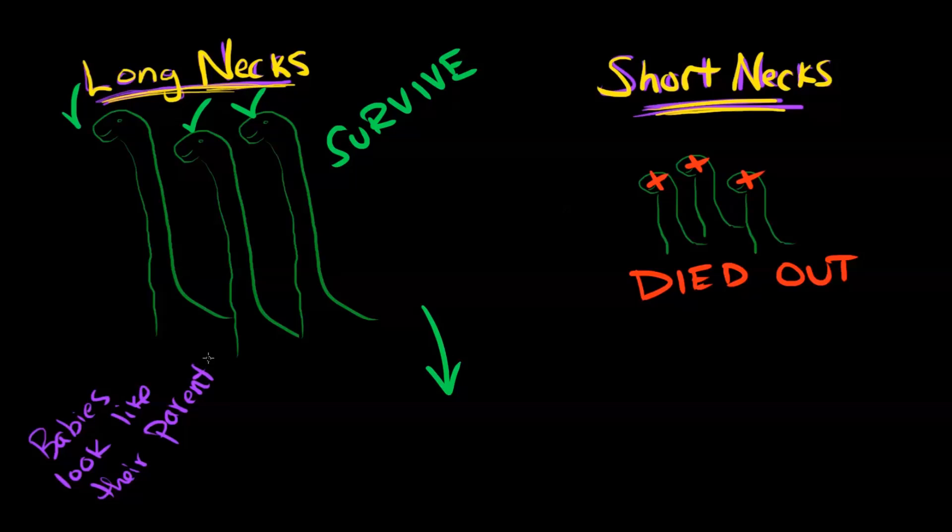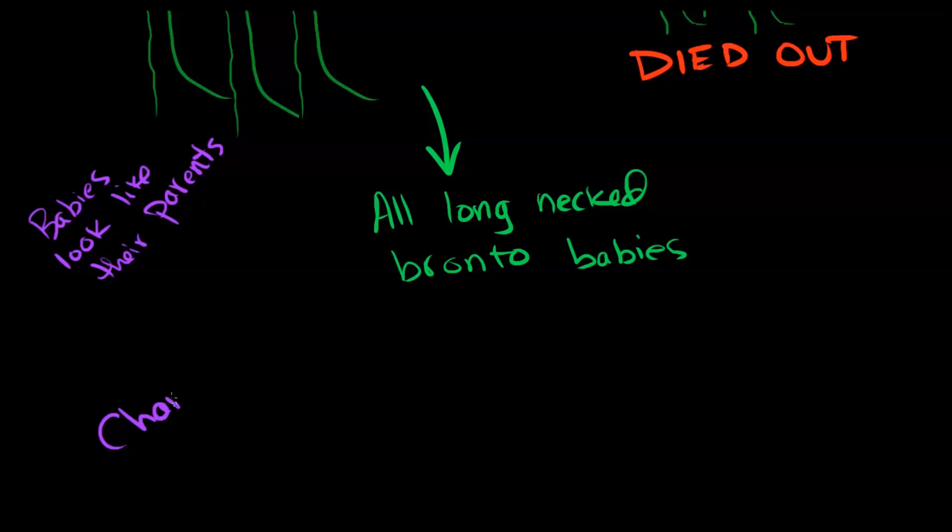I mean, think about it. A Chihuahua always has Chihuahua puppies. A Labrador Retriever always has Labrador Retriever puppies. You probably look like your parents. Your friend probably looks like his parents and so on. So, babies look like their parents, which means if only the long necks are having babies, then what we're going to end up with is all long necked Brontosaurus babies. And this is actually kind of amazing because what's just happened is we started with a mixed group. Some long neck, some short neck. And because the short necks died out and the long necks survived and had babies, the next set of Brontosaurus is all going to have long necks. That's a change in a group of living things over time. This is really important. A change in a group of living things over time.